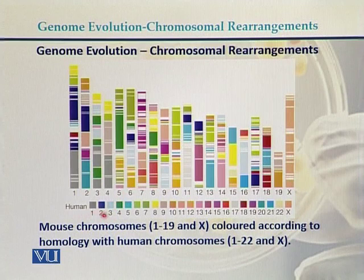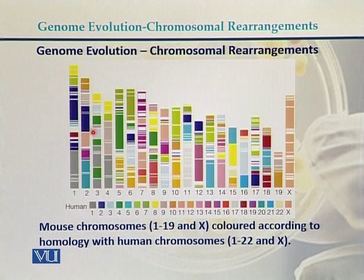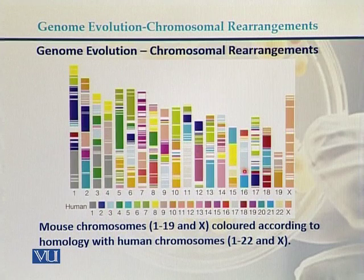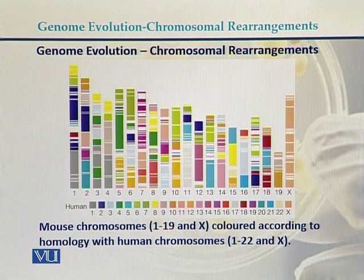Taking another example, in the case of human chromosome 3, we can see that it has homology with mouse chromosome 3 and also with mouse chromosome 16. So here we can see that approximately 160 million years ago the mouse and humans separated from each other.